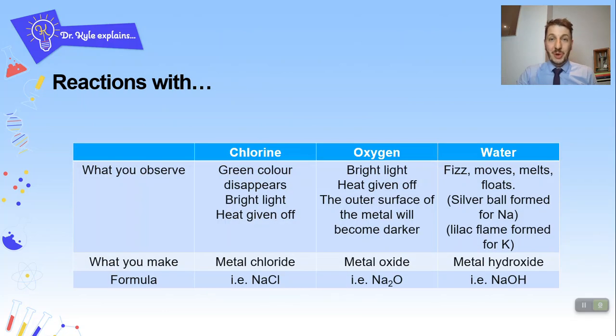Okay, so for your GCSE what you need to be able to do is give some observations and come up with what would react with the Group 1 metals when they react with chlorine, oxygen and water. So let's have a look at chlorine first as I've summarised all of this in a table for you.